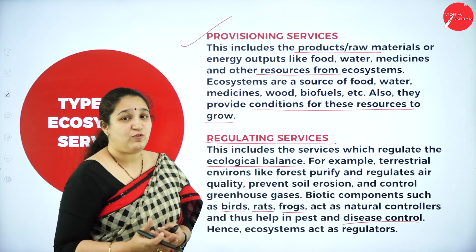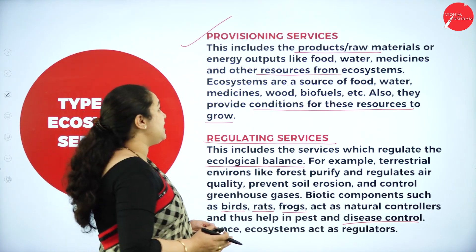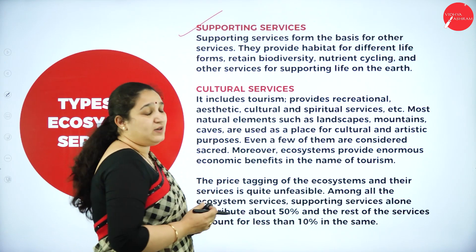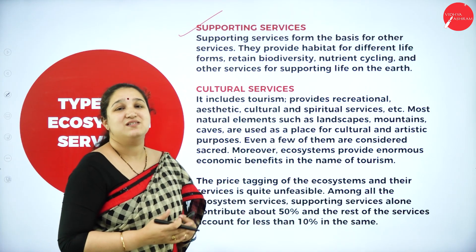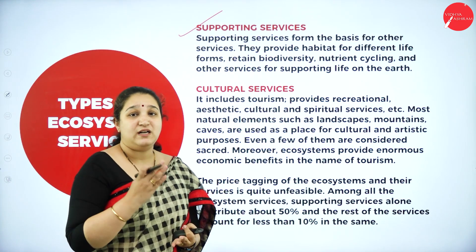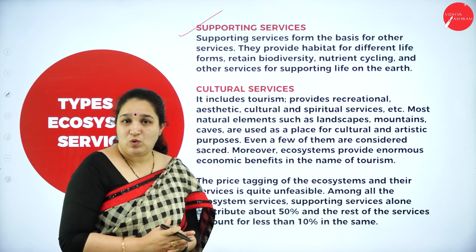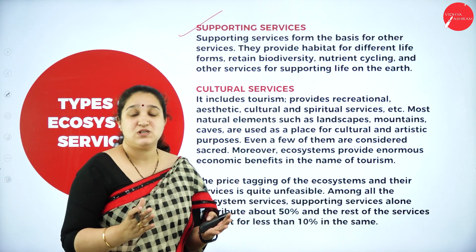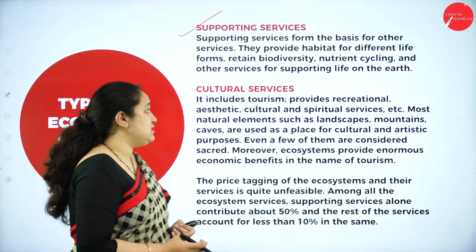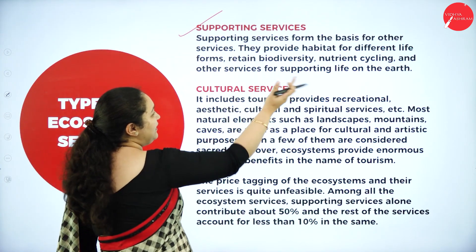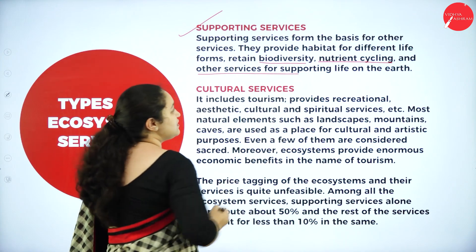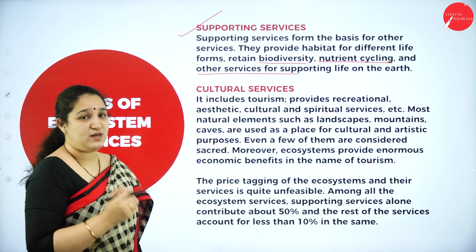The next type of ecosystem service is supporting services. Supporting services mean the ecosystem gives us a place to live, provides land, food, clean air, and clean water. We get so many resources which we can use for our own benefit. They provide habitat for different life forms, retain biodiversity, support nutrient cycling, and other services for supporting life on earth.